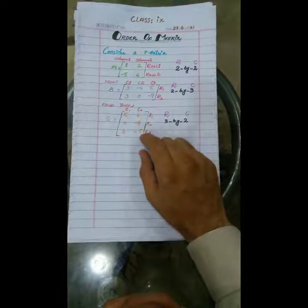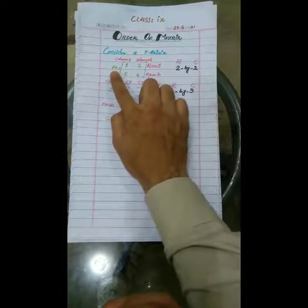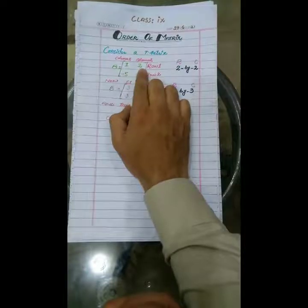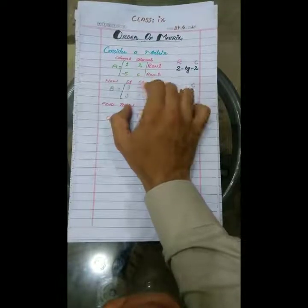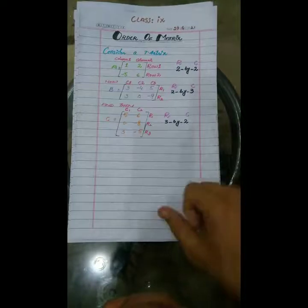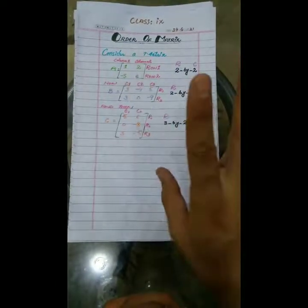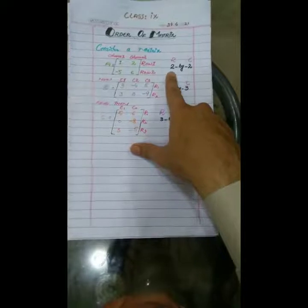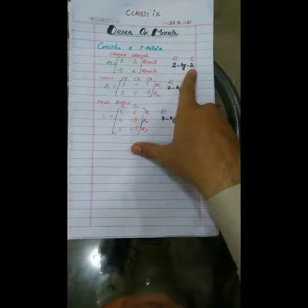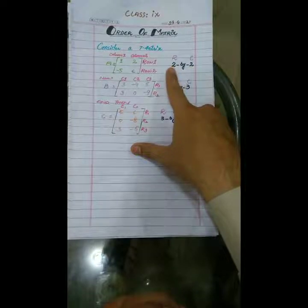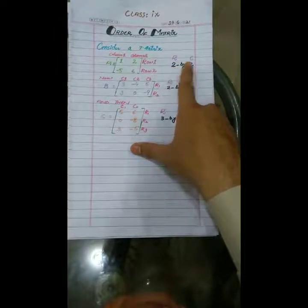How many vertical arrays are there? Two — meaning how many columns are there? Two. So how do you write the order of a matrix? There are two rows and two columns. You write rows first, then by, then columns — that is two by two. We pronounce it as row by column, so the order of this matrix is two by two.